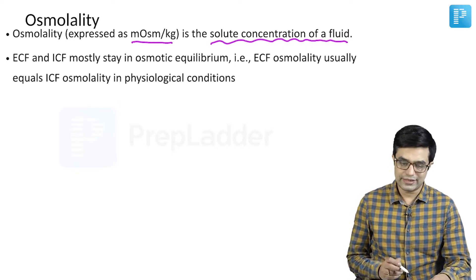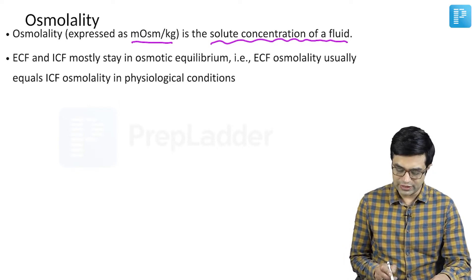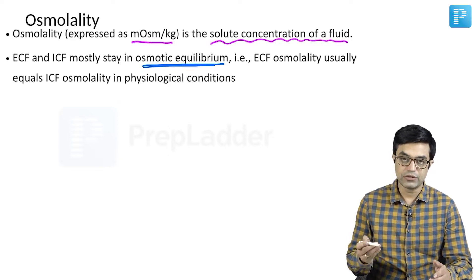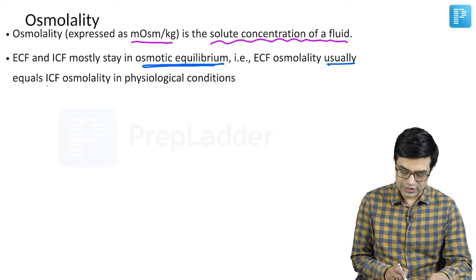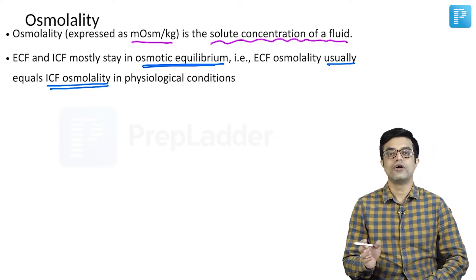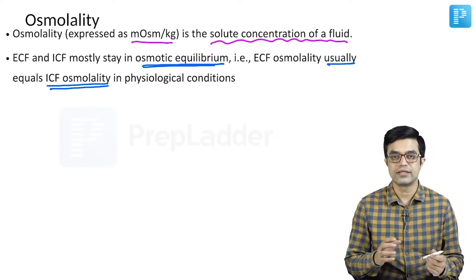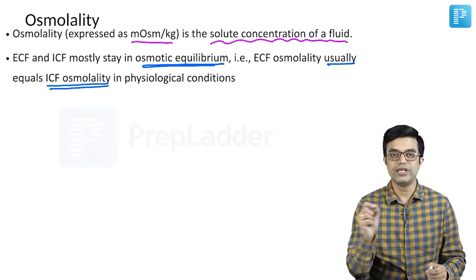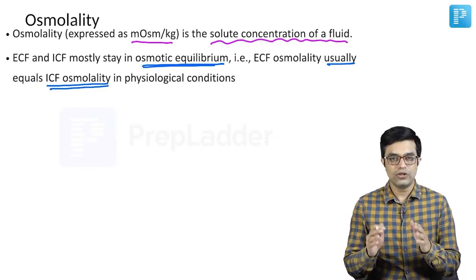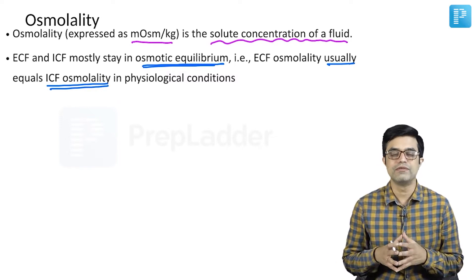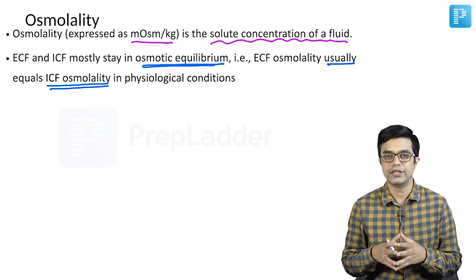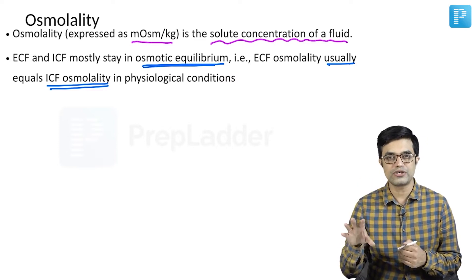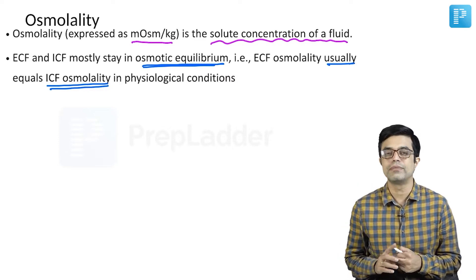It is normally seen that ECF and ICF mostly stay in osmotic equilibrium. That is, ECF osmolality usually in physiological conditions equals the ICF osmolality. The major reason for that is, although the concentration of ions is different across the two fluid spaces, water tends to move freely across the two spaces. So in normal physiological conditions there is an osmotic equilibrium. If there is a change in the ions, it will produce alterations in the movement of water and this equilibrium will be re-established.